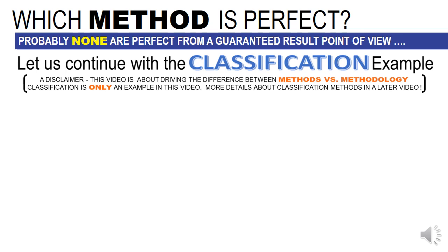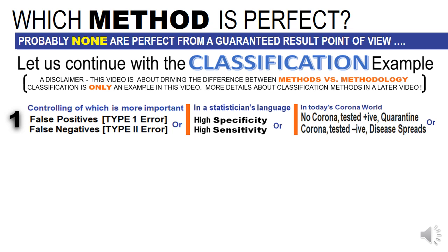Let us continue with the classification example. A disclaimer: this video is still about driving the difference between methods versus methodology; classification is only an example. So, let us now go for the trade-offs. Which is more important from a controlling point of view — false positives, the so-called type 1 error, or false negatives, the so-called type 2 error? Statisticians would call this high specificity versus high sensitivity.